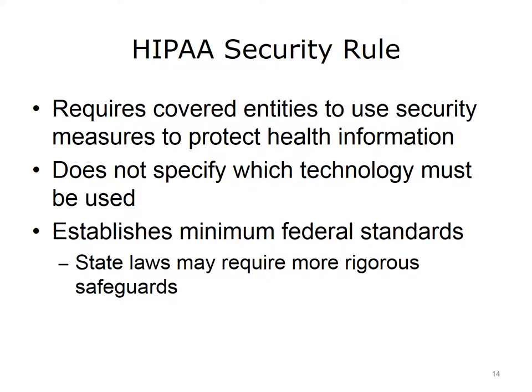The HIPAA Security Rule sets out administrative, physical, and technical measures that covered entities must have in place to protect electronic health information. The security rule does not require the use of any specific technology so that organizations can use the latest electronic communications and security technologies as they are developed. The law emphasizes that security is an ongoing process rather than a one-time goal. The HIPAA Security Rule establishes certain minimum standards. In some states, state law may require more rigorous safeguards than HIPAA specifies, and in these cases, covered entities must follow the more stringent state laws.